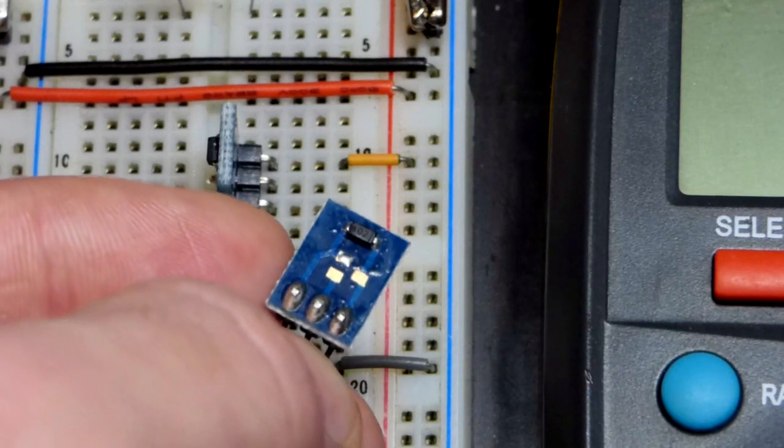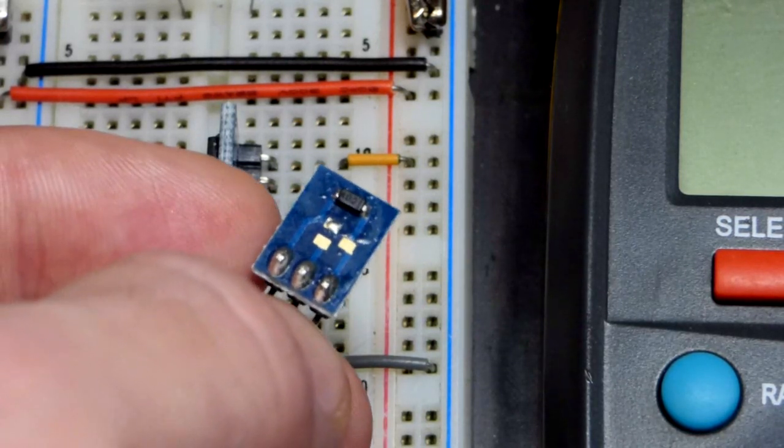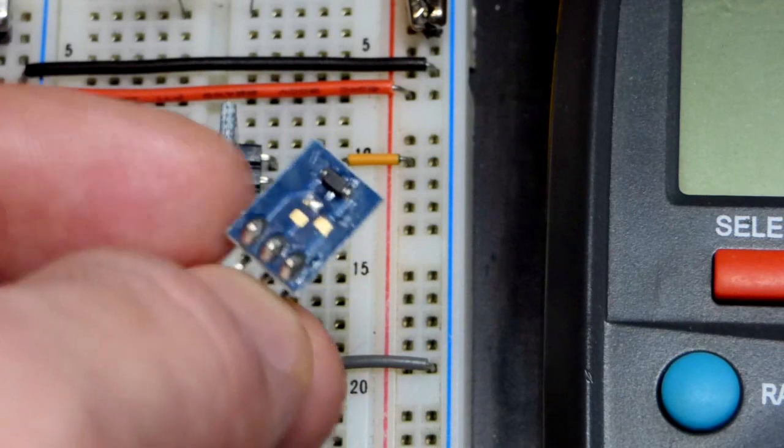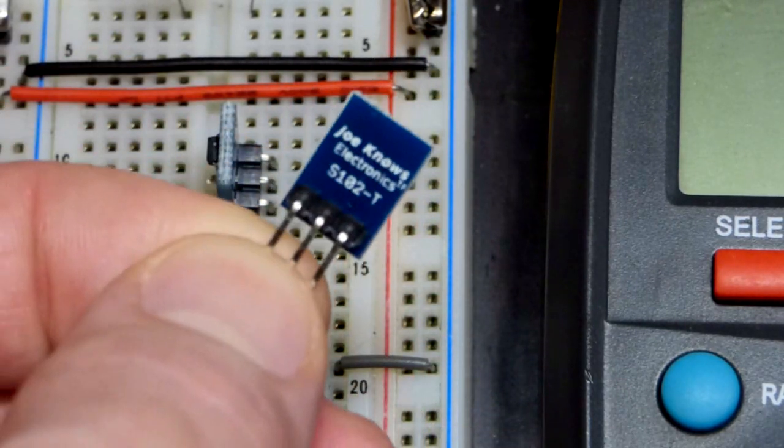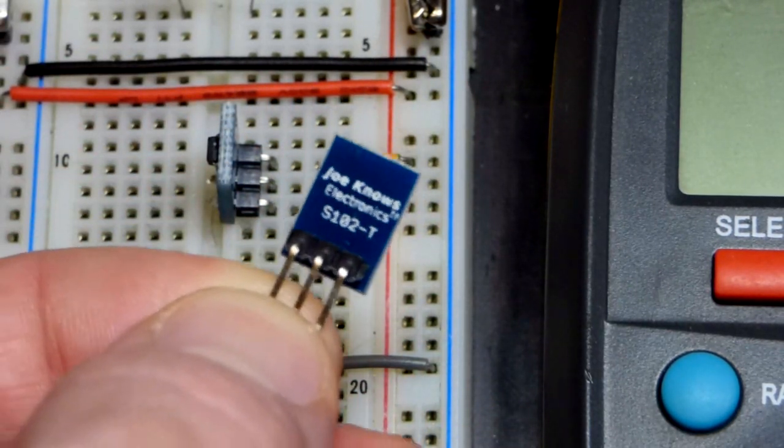You just solder it directly to a board. We're only using the two end pins right here. This is a current regulating diode.